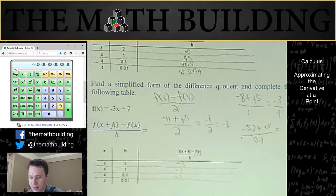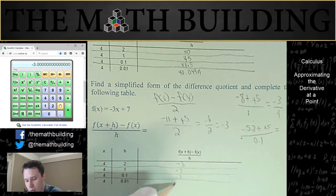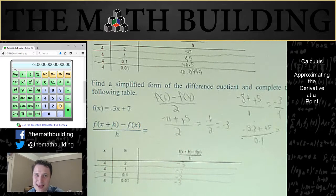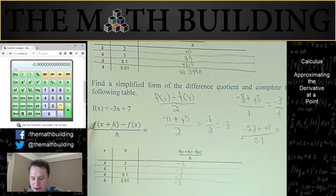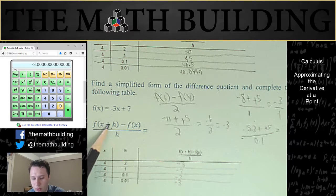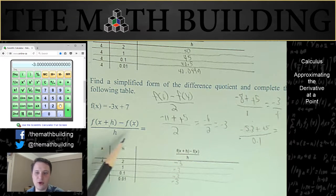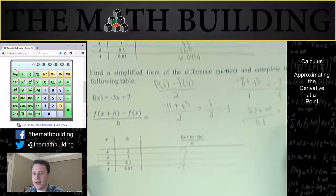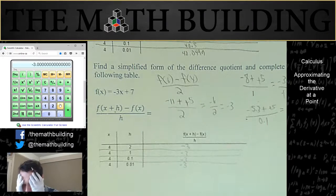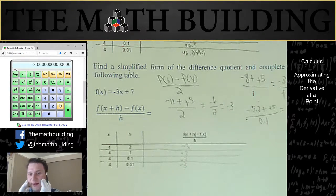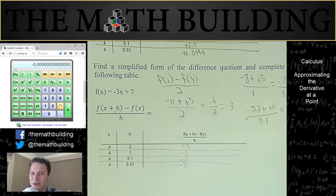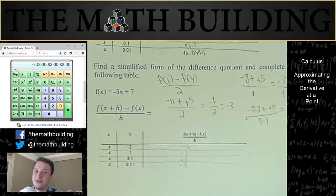What is going on? And it turns out if you do it one more time for this last one, you're going to get negative 3 again. If you find f of 4.01 minus f of 4 divided by 0.01, you're going to get negative 3 again. So why are we getting negative 3 every time? Do you know the answer? I'll give you a hint. The answer is in the function.